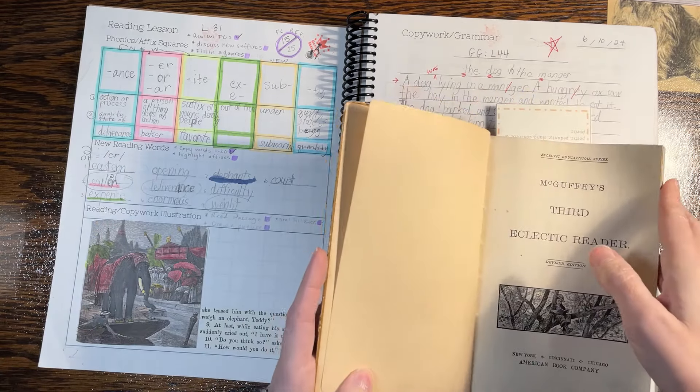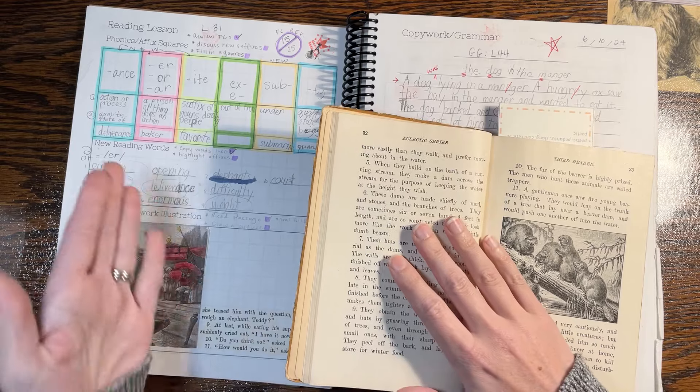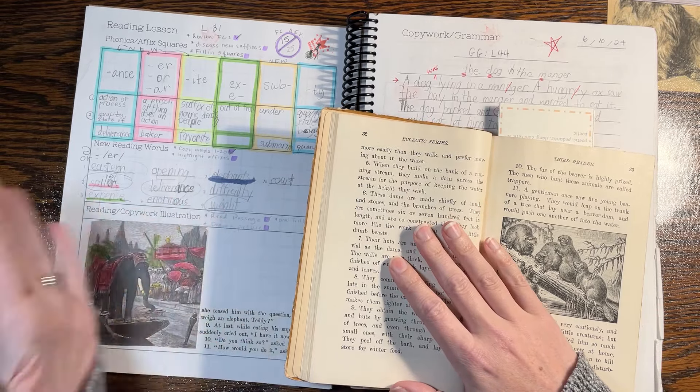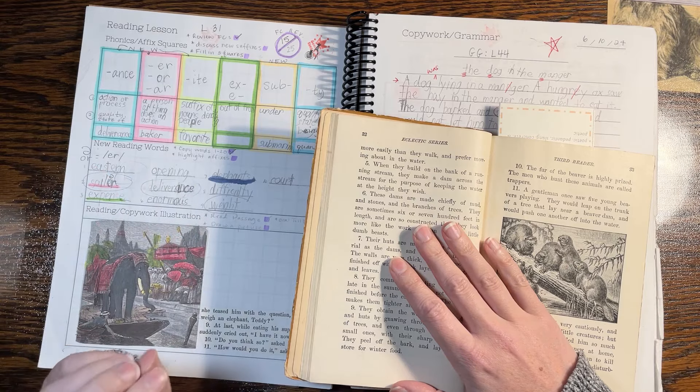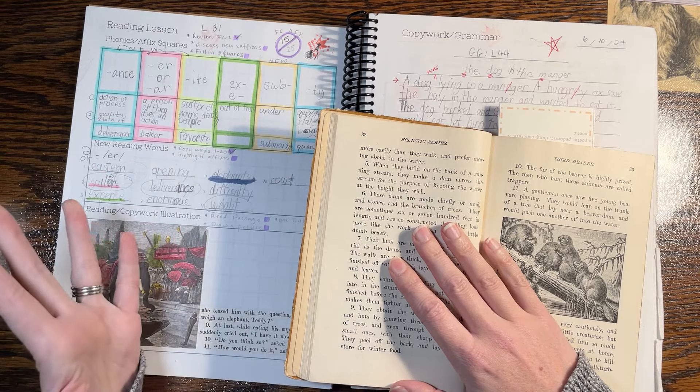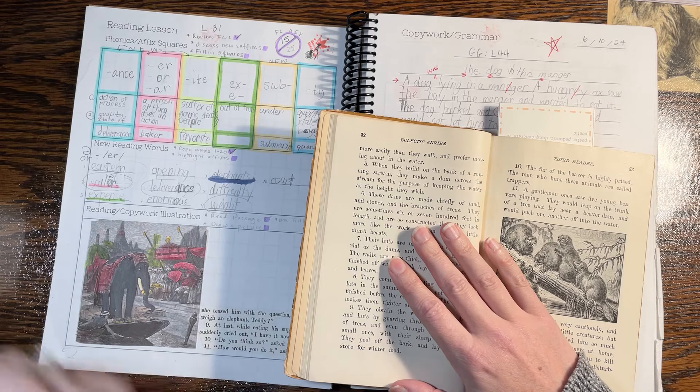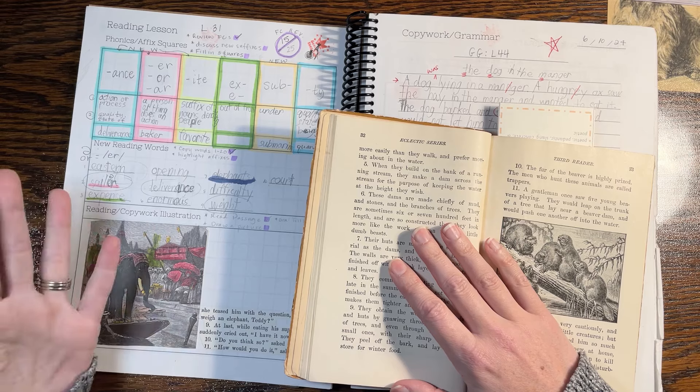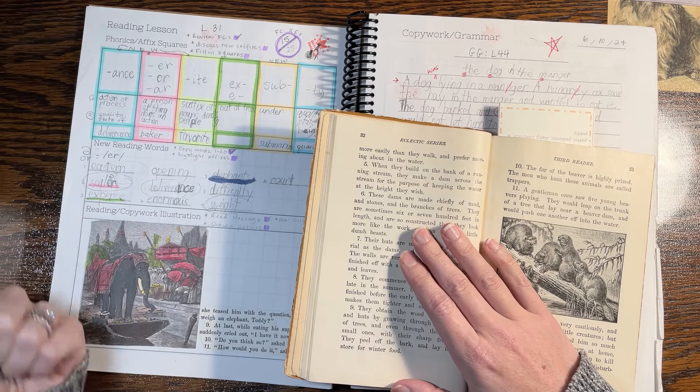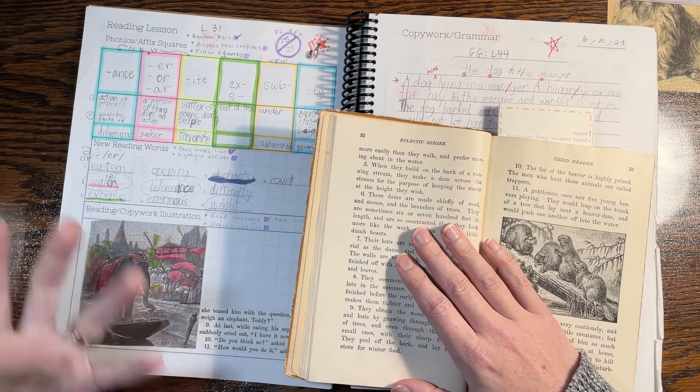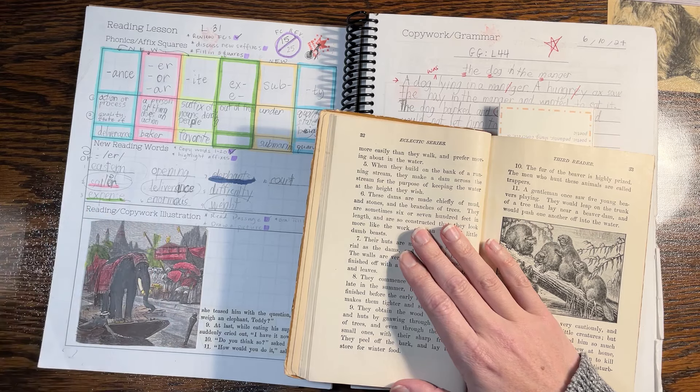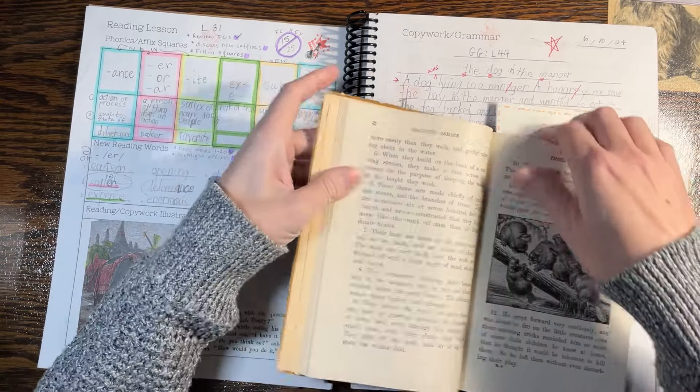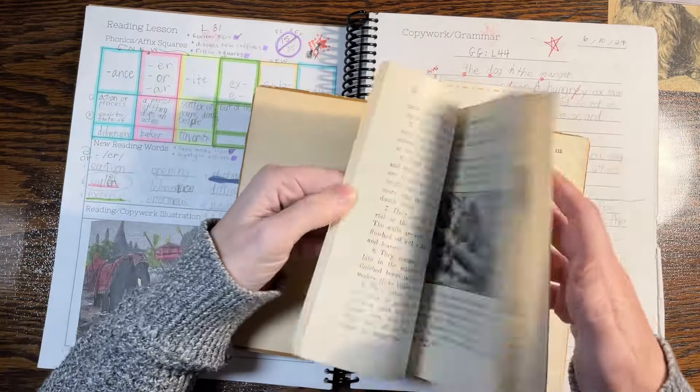So what I was doing is I was using this reading lesson page. So I've got a section up here for phonics slash affix squares, and then a new reading words section, and then a copywork illustration section here. What I was doing is I was basically making a weekly, we're doing about one lesson a week.